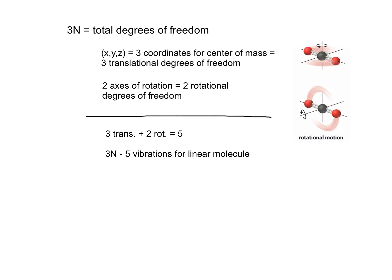For a linear molecule, such as CO2, we only have two rotational motions, because rotation along the molecular axis does not move the position of any of the atoms, and is thus not a rotation. Therefore, we have three translations and two rotations, for a total of five degrees of freedom out of the total three N, and so there are three N minus five left for vibrations when we have a linear molecule.